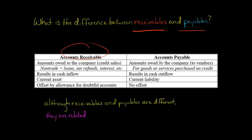So whereas accounts receivable is going to result in a cash inflow — cash coming into the company — accounts payable is going to result in a cash outflow, cash going out of the company.